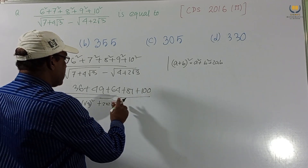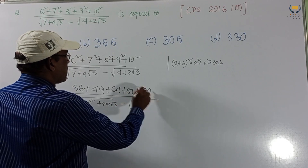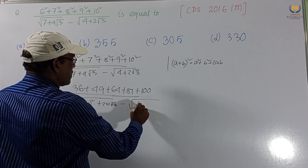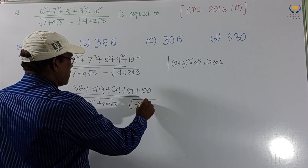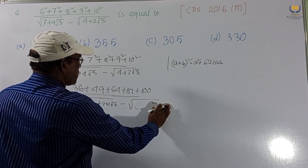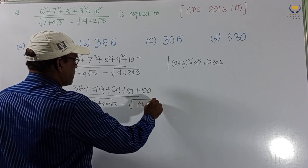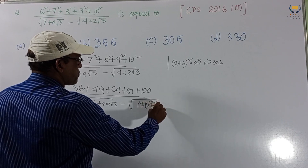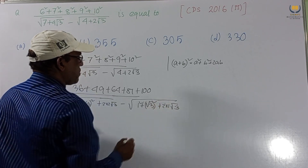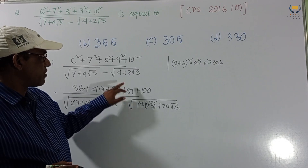Similarly, for √(4 + 2√3): we can write 4 as 1² + (√3)², and 2√3 as 2 × 1 × √3. So 4 + 2√3 = 1² + (√3)² + 2·1·√3. Here (√3)² = 3 and 1² = 1, giving us 4.